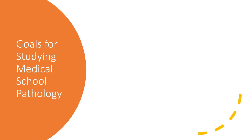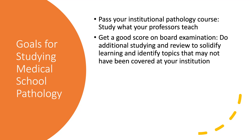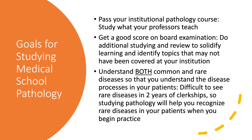The goals for studying medical school pathology are: first, to pass your institutional pathology course — I recommend you study what your professors teach. Next, you want to get a good score on your board examination. For this, you're going to have to do additional studying and review to solidify learning and identify topics that may not have been covered at your institution. In addition, you want to understand both common and rare diseases so that you understand the disease processes in your patients. It's difficult to see rare diseases in two years of clerkships, so studying pathology will help you recognize rare diseases in your patients when you begin practice.